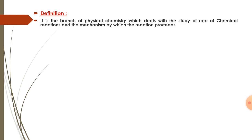First, the definition. Chemical kinetics is the branch of physical chemistry which deals with the study of the rate of chemical reactions and the mechanism by which the reaction proceeds.